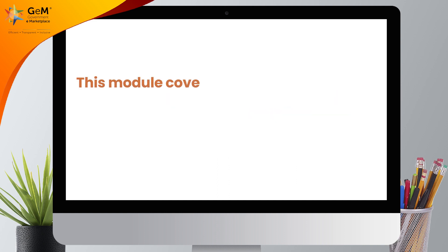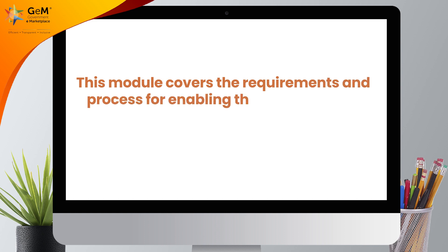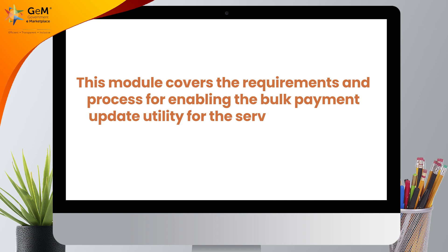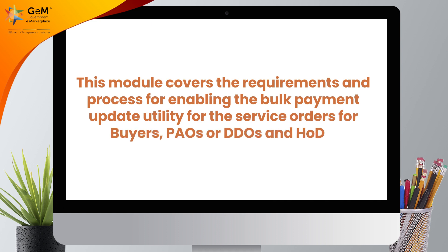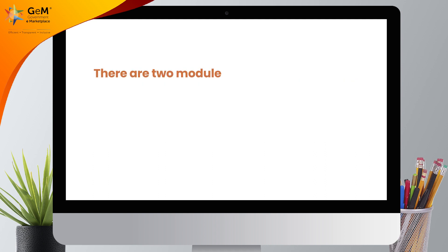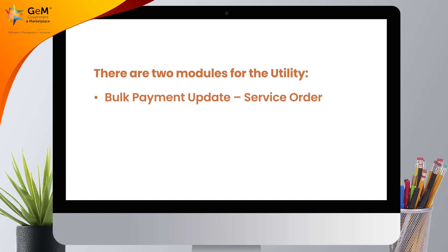This module covers the requirements and process for enabling the bulk payment update utility for the service orders for buyers, PAOs or DDOs and HODs. There are two modules for the utility: Bulk Payment Update Service Order, and Bulk Payment Update Service Shipment.